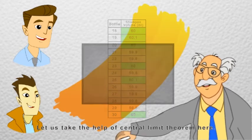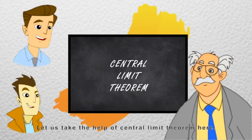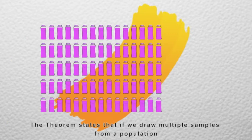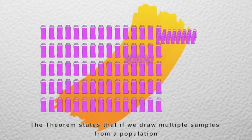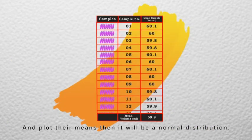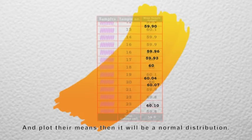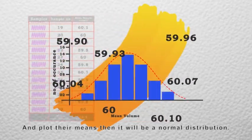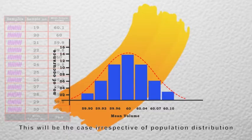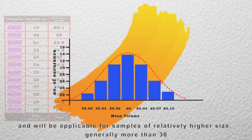Let us take the help of central limit theorem here. The theorem states that if we draw multiple samples from a population and plot their means, then it will be a normal distribution. This will be the case irrespective of population distribution and will be applicable for samples of relatively higher size, generally more than 30.